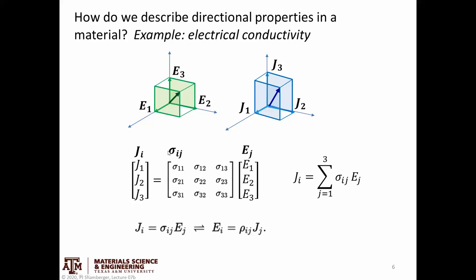But you can see that I've gone from the case where I have just a simple scalar, I just have a single number, now conductivity actually has nine different components.